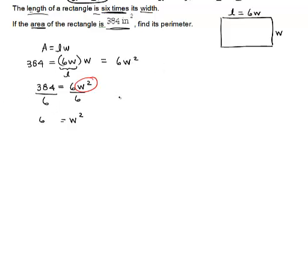So I get W squared equals, let me do a little bit of work over here. So I have 384 divided by 6, it goes in 6 times, 6 times 6 is 36, I get 24. Bring down the 4, so I get 6 times 4. So my width squared is 64. So if I take the square root of both sides, then I simply get W equals 8.